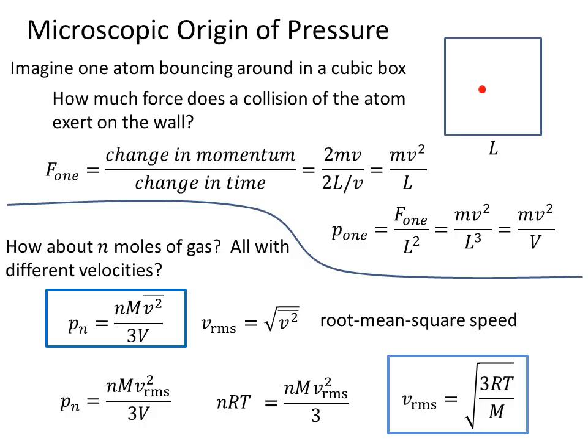If we then solve for V_rms, we find that the RMS velocity is simply equal to the square root of 3 times R times T divided by the molar mass. The only variable in here is the temperature. So the temperature is related to the RMS velocity.